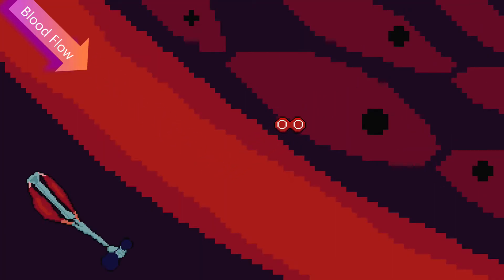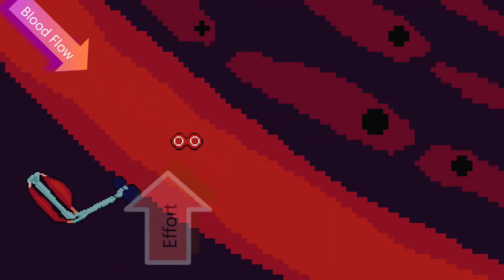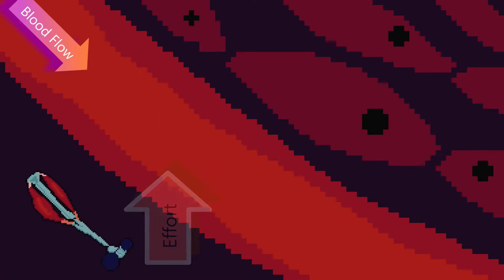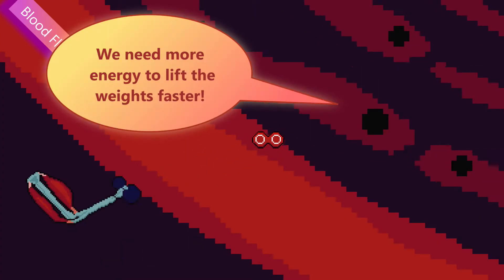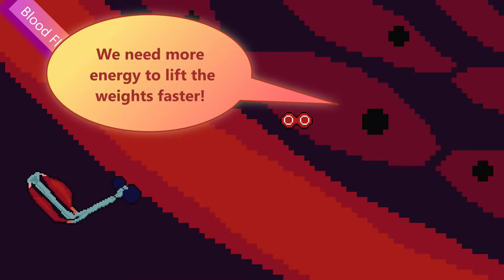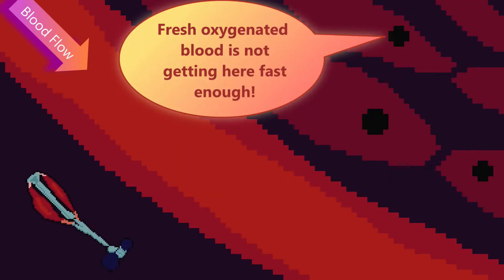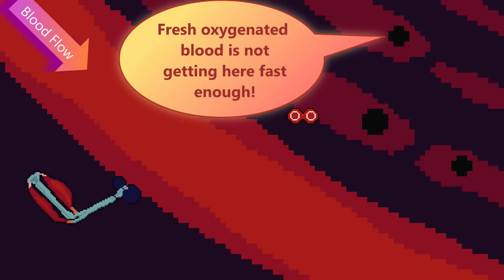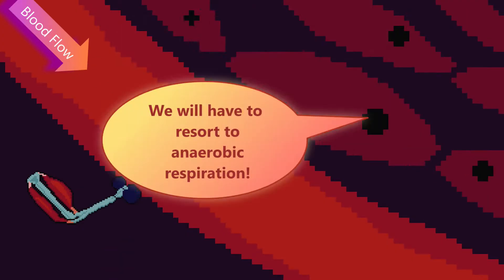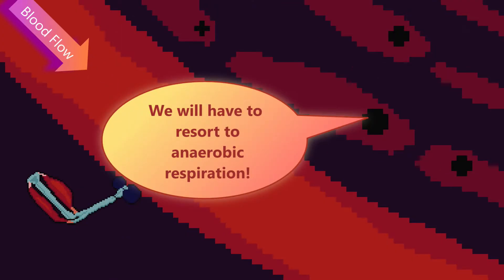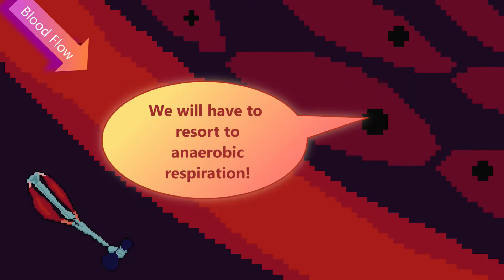When we exercise vigorously, our muscles demand more energy because they are working harder. So in theory, they need more oxygen reacting with glucose via aerobic respiration. The trouble is, your body can't supply oxygen fast enough to the cells to meet the energy demand if the exercise is too vigorous.